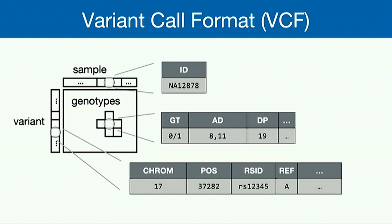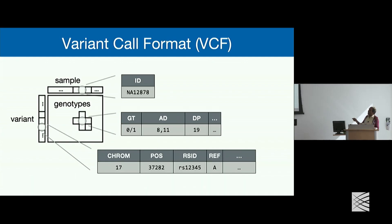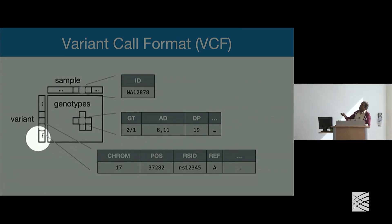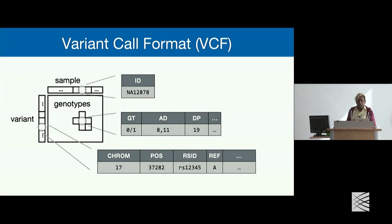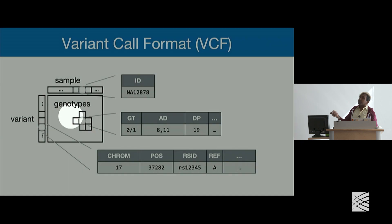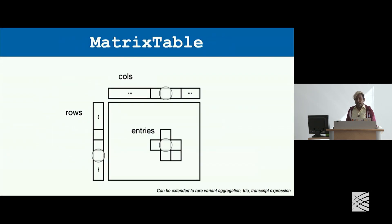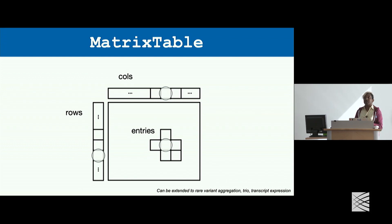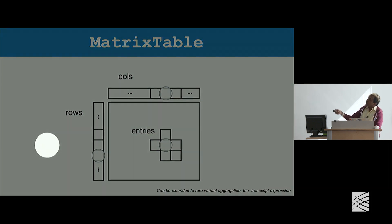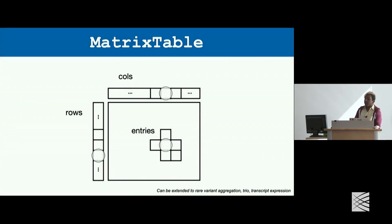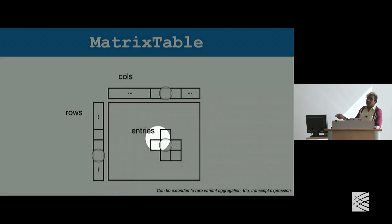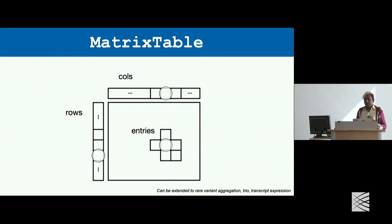When we think about what geneticists work with, we start with VCF files — our variant call files. These have variant rows and sample ID columns, with genotypes as entries. Hail exports these into a format called a matrix table, which allows you to slice and dice data for faster, more efficient parallelization. Rows are constant for every column, and columns are constant for every row.